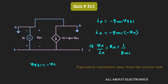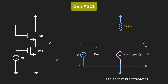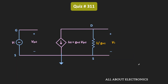Therefore, Vx divided by Ix, or the equivalent resistance, is equal to 1 over Gm1. This is the equivalent resistance seen from this side. In the equivalent circuit, it can be represented as a resistor connected between the drain and the ground terminal, or effectively between the drain and the source terminal.